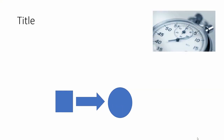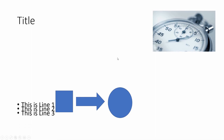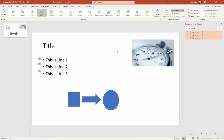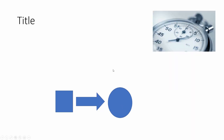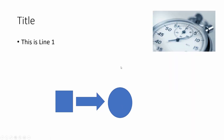But I think a better effect would be maybe one line at a time. We could do that just by putting an on-click in between each of those, and that would be nice — each click brings up a line.